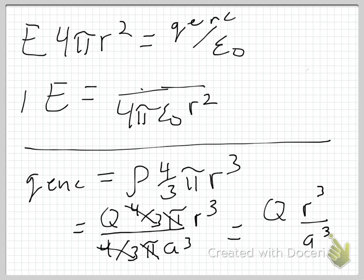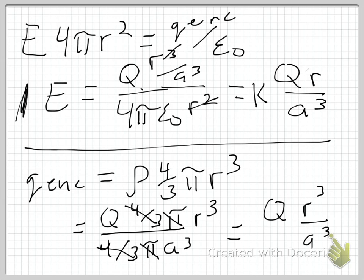I can go back up to this expression here and plug in my Q enclosed, which is Q r cubed over a cubed. And hopefully you see what's going to happen: the r squared on the bottom will cancel with two of these guys, the a cubed will go down to my denominator. I'm again going to substitute 1 over 4 pi epsilon naught for k, and that entire thing is equal to k Q r, I have one r remaining, over a cubed.